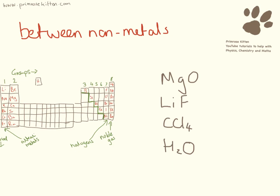So here are some examples for you to have a go at. Magnesium oxide, lithium fluoride, both have a metal and a non-metal in. So magnesium is a metal, oxygen is a non-metal. So that is not covalent bonding.